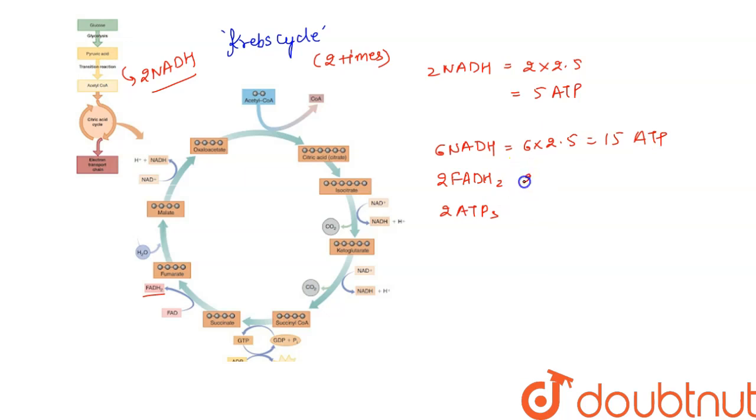This will be equal to 2 times 1.5, that is 3 ATPs, and there will be 2 ATPs here. So total ATP production here in Krebs cycle is 25 ATPs.